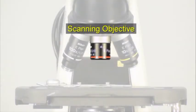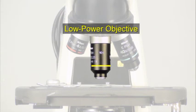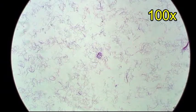Each successive objective is longer with increased magnification. Next is the low power objective with a 10x stamp and a yellow band. It yields a total magnification of 100 times.